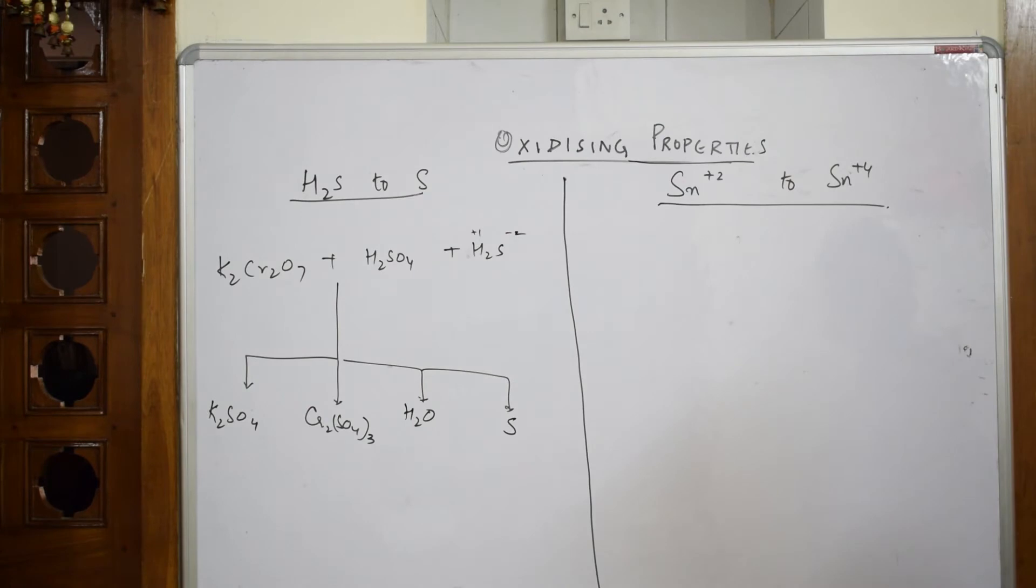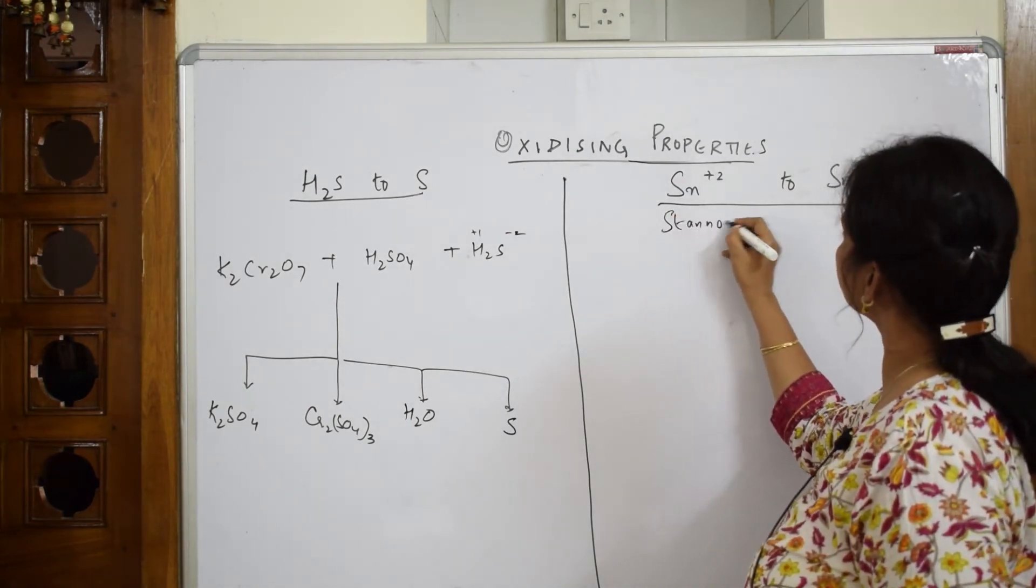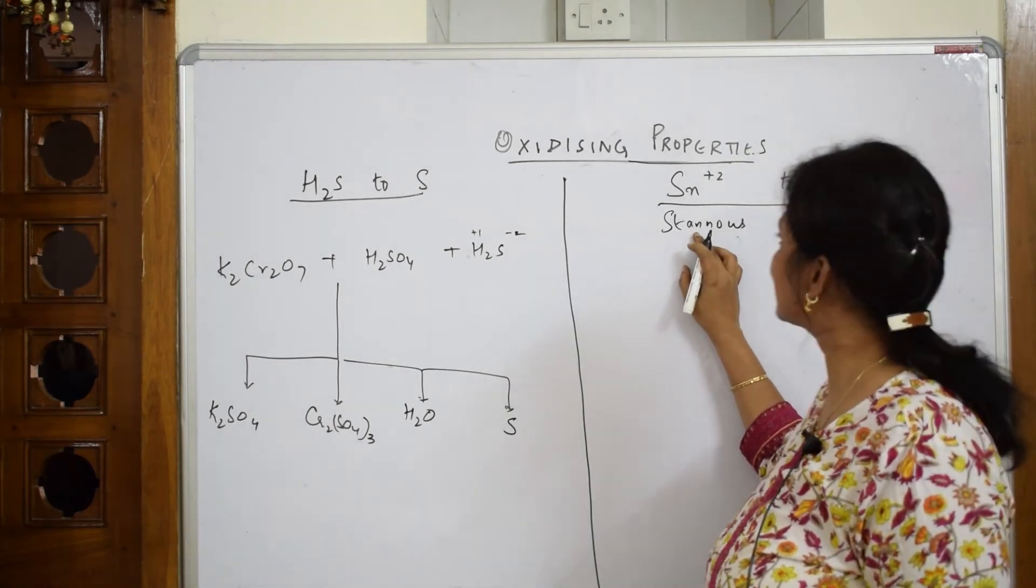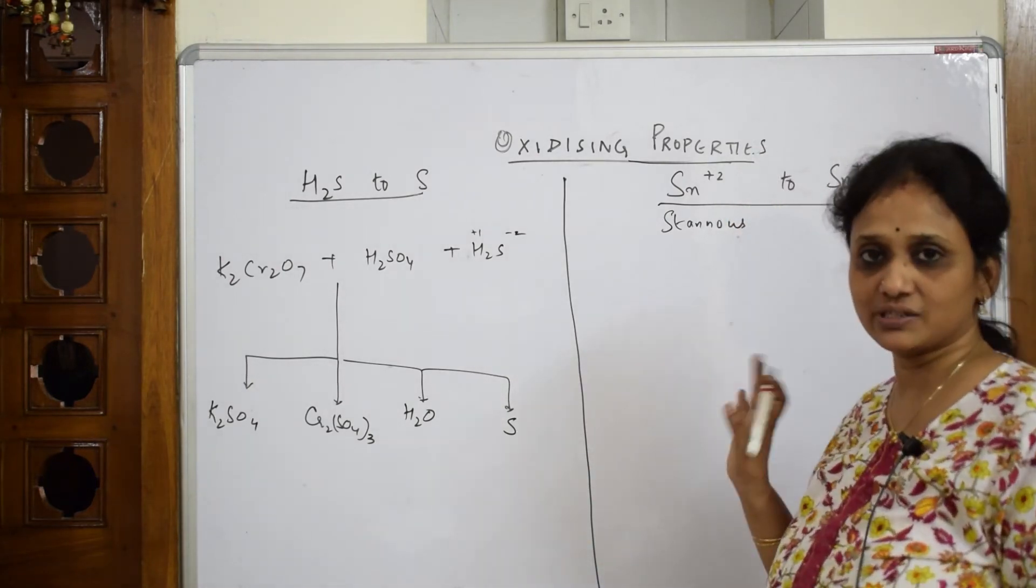Now let us come back and see with stannous, Sn²⁺. This is stannous. This is stannic. So if I take stannous chloride SnCl₂, stannic chloride SnCl₄. Now let me write the ionic reaction of this so that you will understand why I'm writing all these.